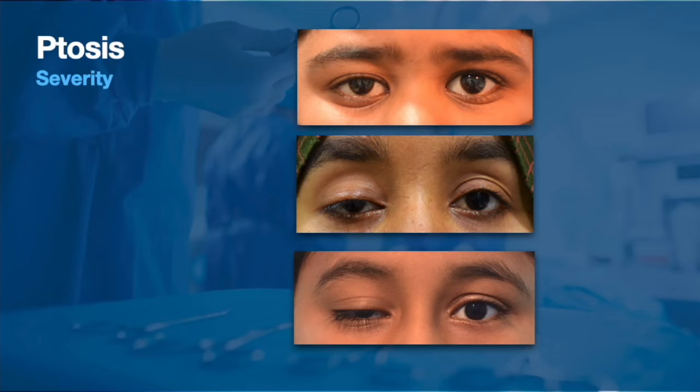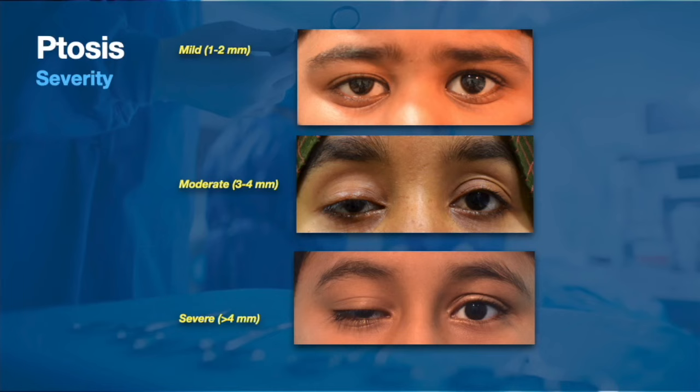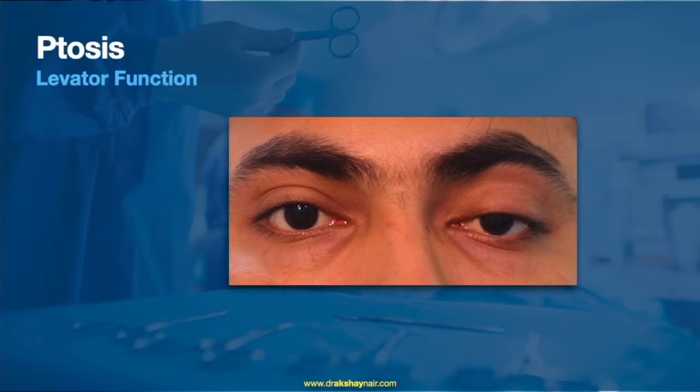The next thing to assess is the severity of ptosis. A difference of about 1-2 mm between the normal and the ptotic eyelid indicates mild ptosis. Ptosis is considered moderate when the difference is about 3-4 mm. When the difference is more than 4 mm, it is considered severe.